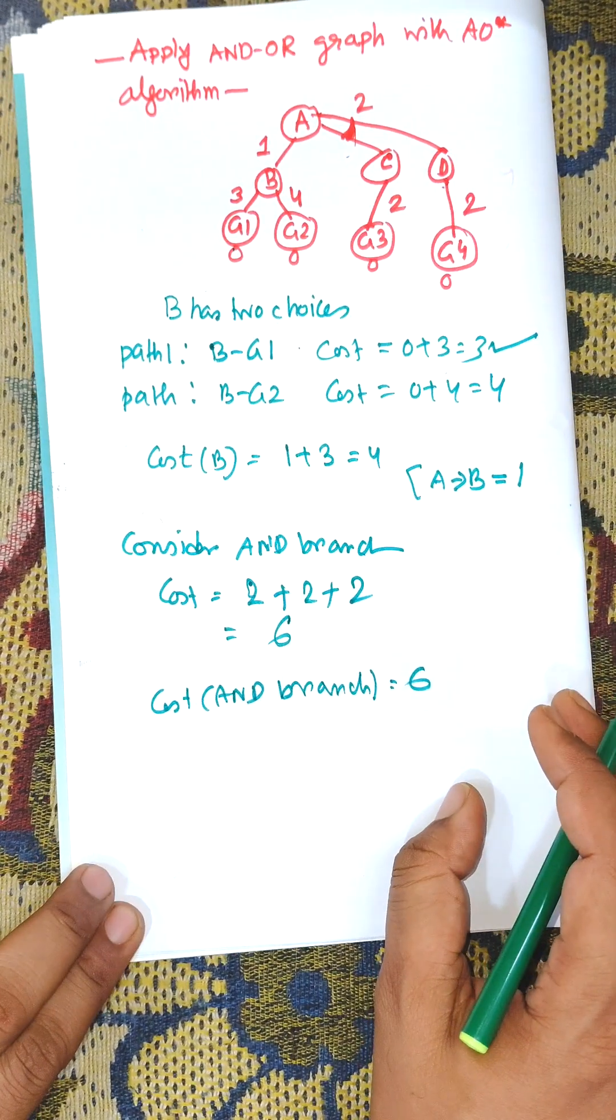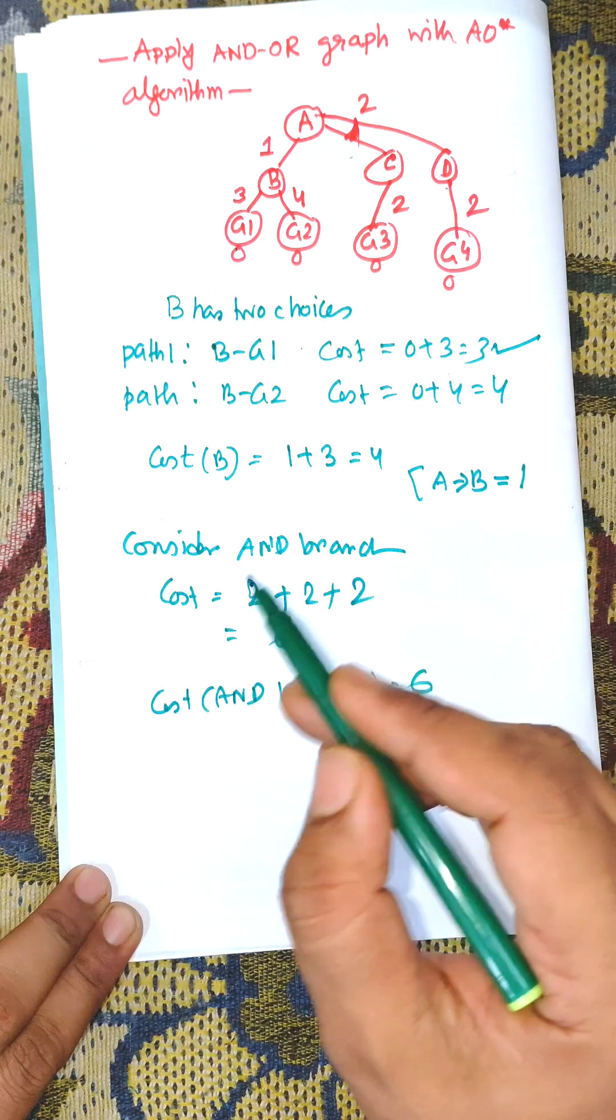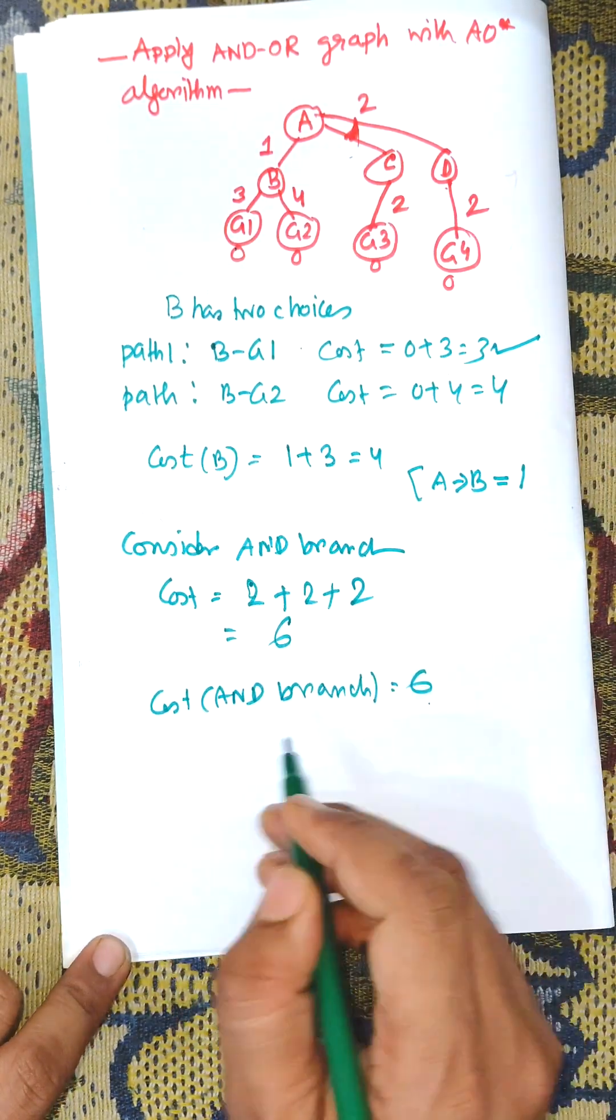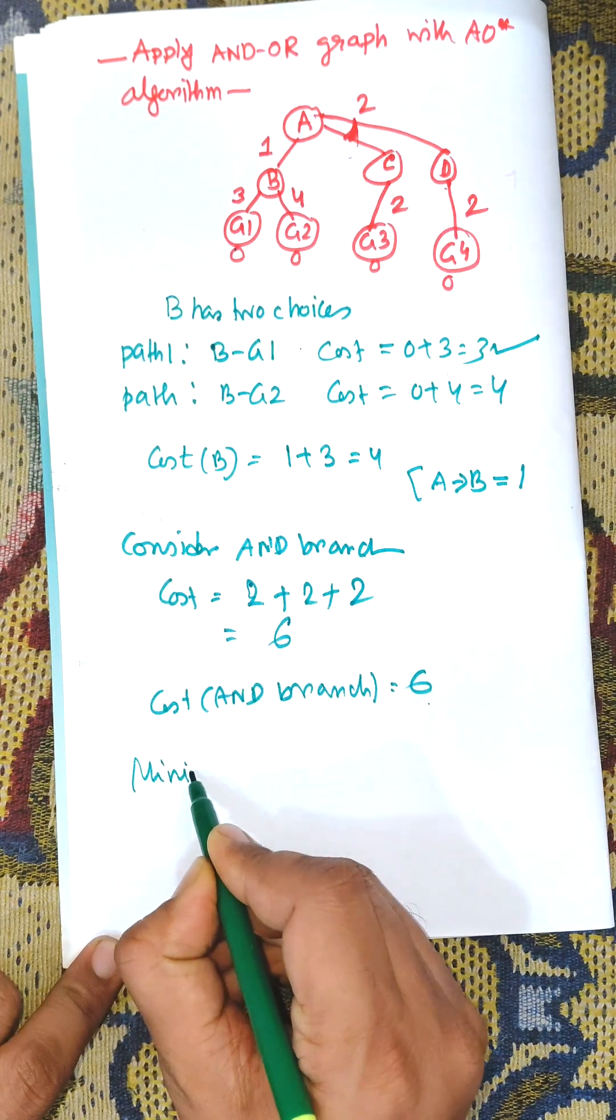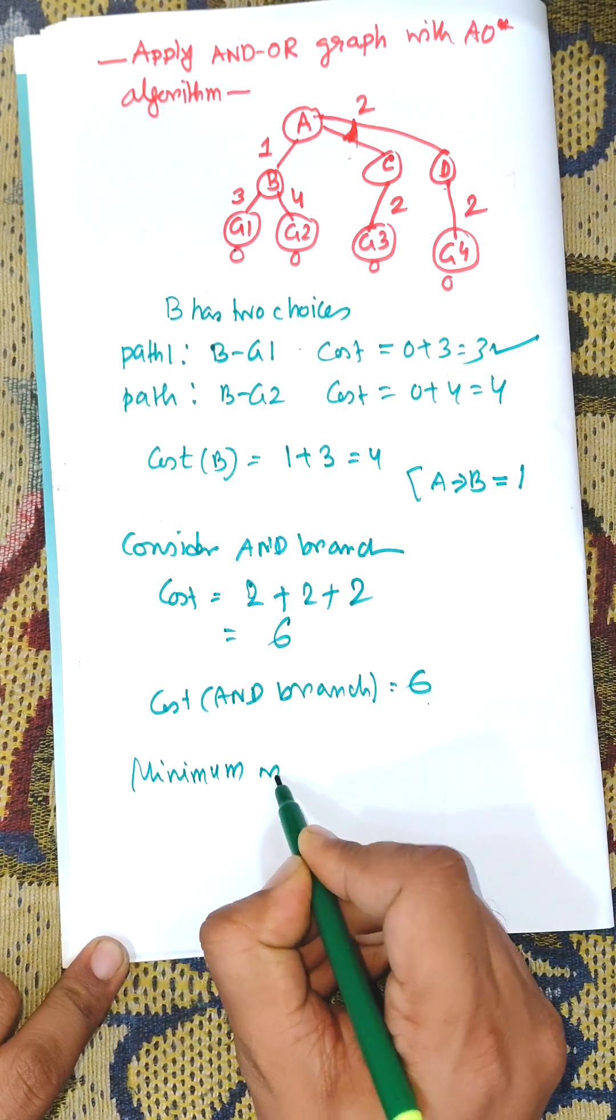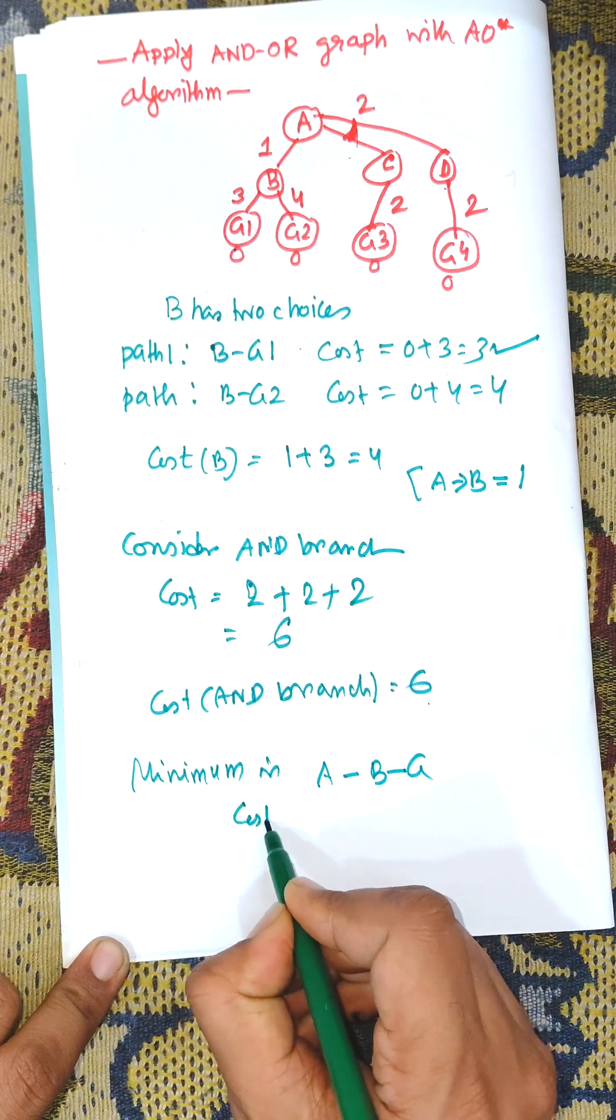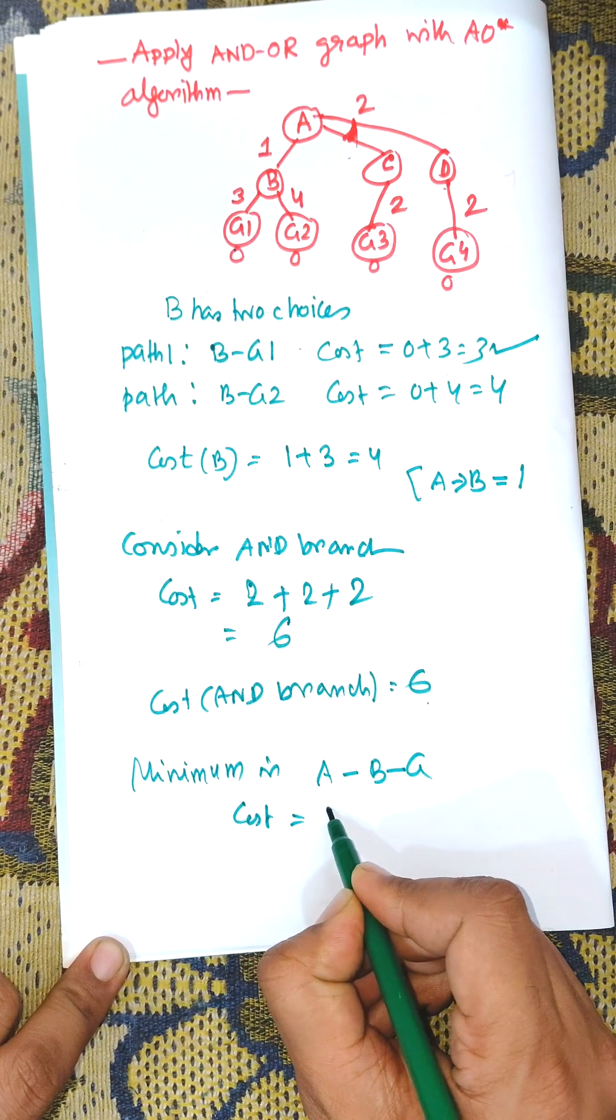Now choosing from B to B, where A, B, G cost is 4, and for the cost of branch is 6, minimum is A to B to G, and cost is equal to 4.